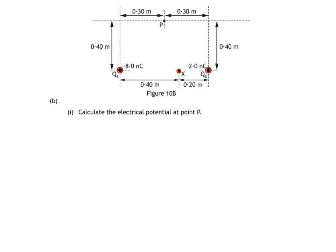In B part 1, we're asked to calculate the electrical potential at point P. We use the same method as in the last question, but first we need to calculate the distance from charges Q1 and Q2 to point P. The distance from Q1 to P is just the hypotenuse of this right-angle triangle. You can see that the distance from Q2 to P is the same. Distance R is equal to the square root of 0.30 squared plus 0.40 squared, which is 0.50 metres.